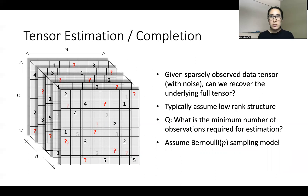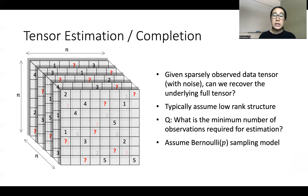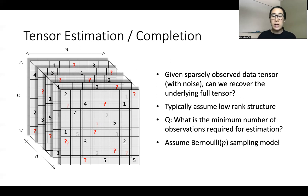Since this is impossible in full generality, we typically assume low-rank structure, which reduces the degrees of freedom of the underlying tensor to only linear in n. A natural question is: what is the minimum number of observations required for estimation? We assume the Bernoulli sampling model, which is also commonly assumed in the literature, in which every entry is independently observed with probability p.